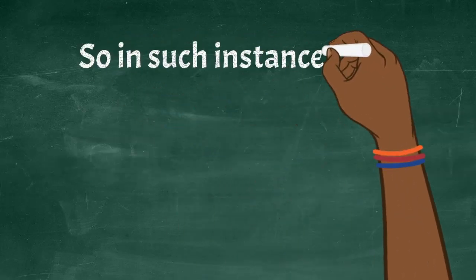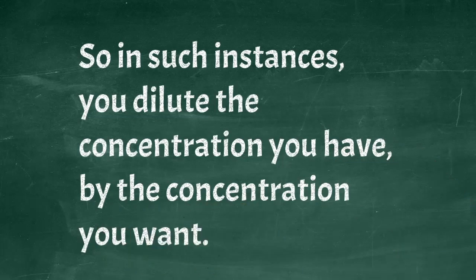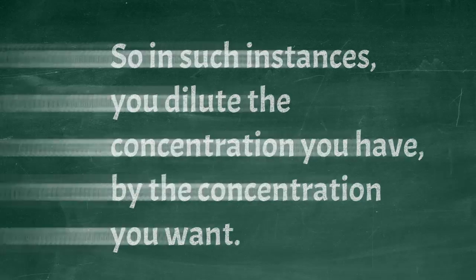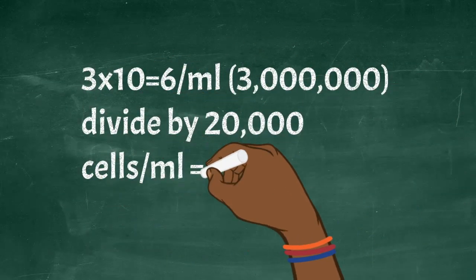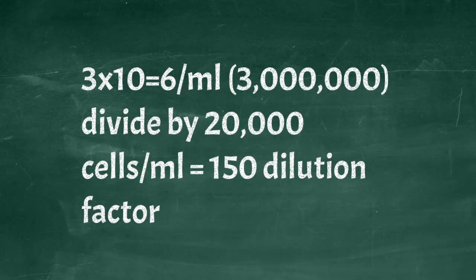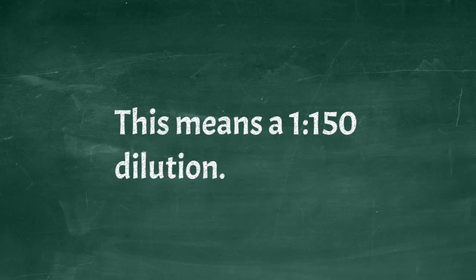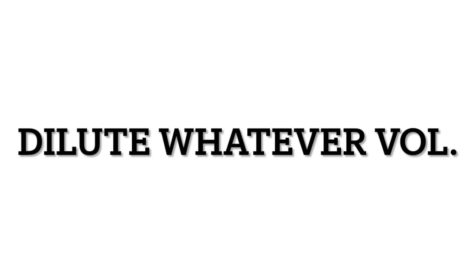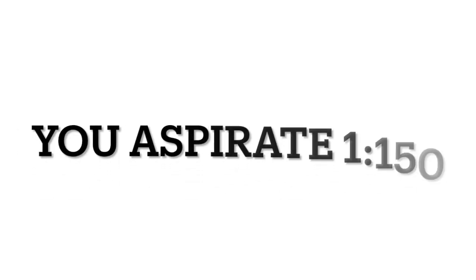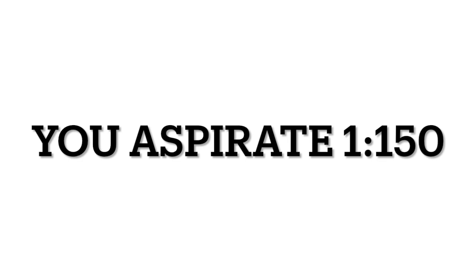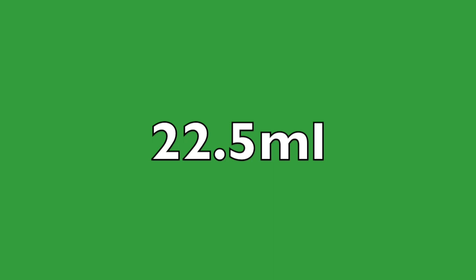You need to know the dilution factor. In such instances where you want a concentration, you have to divide the concentration you have by the concentration you want. We have a concentration of 3 by 10 to the 6 per ml cells, so we divide that by 20,000 cells per ml that we want and we get a dilution factor of 1 in 150. This means the 3 million cells per ml suspension would need to be scaled up or diluted to 150 ml in order to have each ml contain 20,000 cells. Alternatively, whatever fraction of the cells we take, we need to scale it up 150 times. So say I wanted to take just 150 microliters, I would dilute that in 22.5 ml to have that ratio maintained.